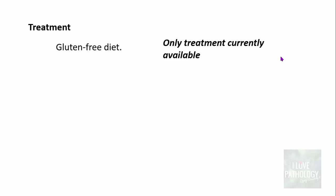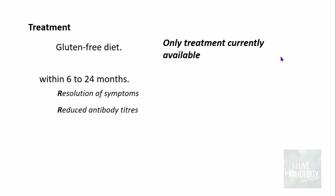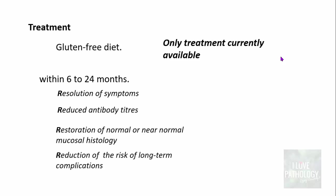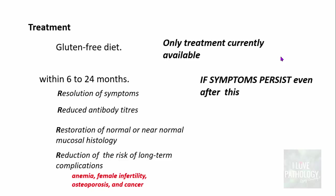Unfortunately, a gluten-free diet is the only treatment currently available. Within 6 to 24 months of strict adherence to a gluten-free diet, there will be resolution of symptoms, reduced antibody titers, restoration of normal or near-normal mucosal histology, and reduction of the risk of long-term complications such as anemia, female infertility, osteoporosis, and cancer. If symptoms persist despite strict adherence, this may indicate refractory sprue or the possibility of malignancy.